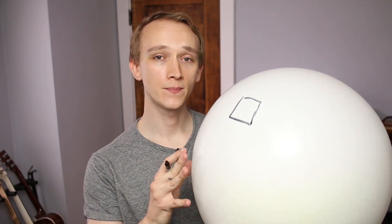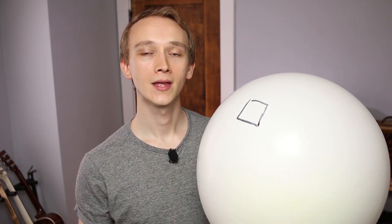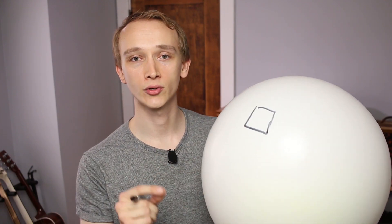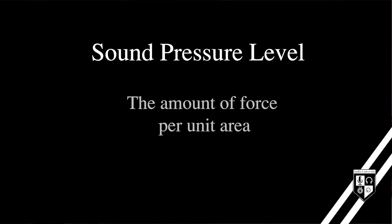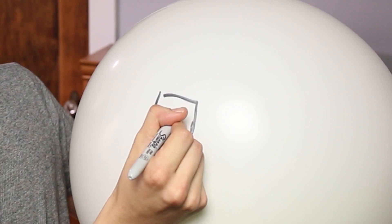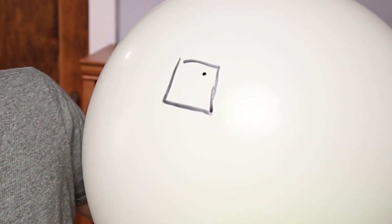I made a video on the inverse square law that you can watch right here. As the honey is spread thinner and thinner across the expanding surface area of the balloon, the thickness of the honey at any given point decreases. The thickness of the honey relates to sound pressure level. Our ears and microphones don't measure a sound's intensity or the amount of energy flowing through a large surface area — they instead measure the amount of pressure or force at any given point. In audio production, sound pressure level is therefore much more relevant than sound intensity level.